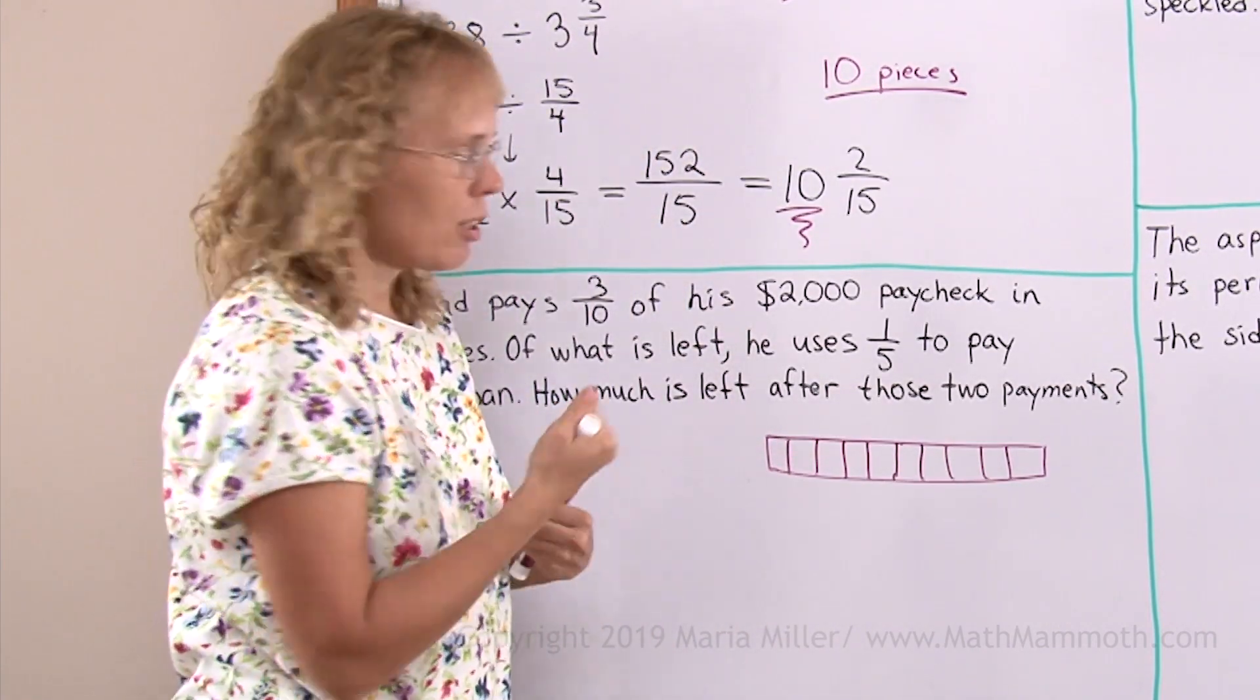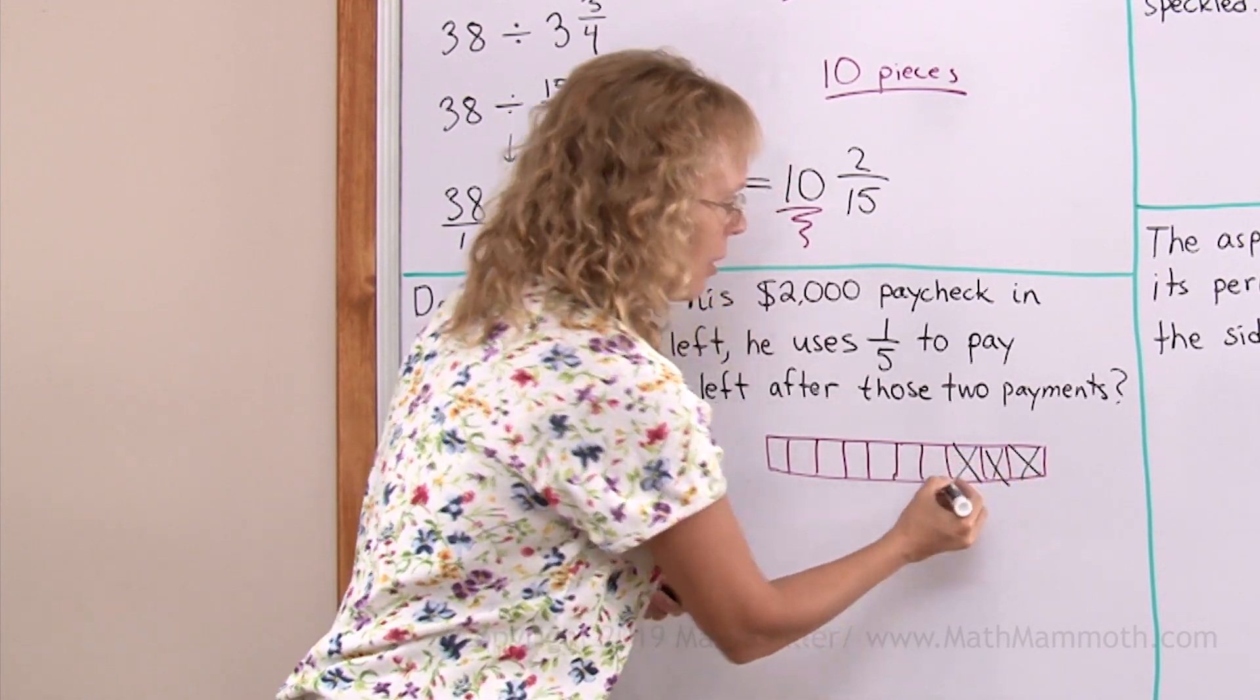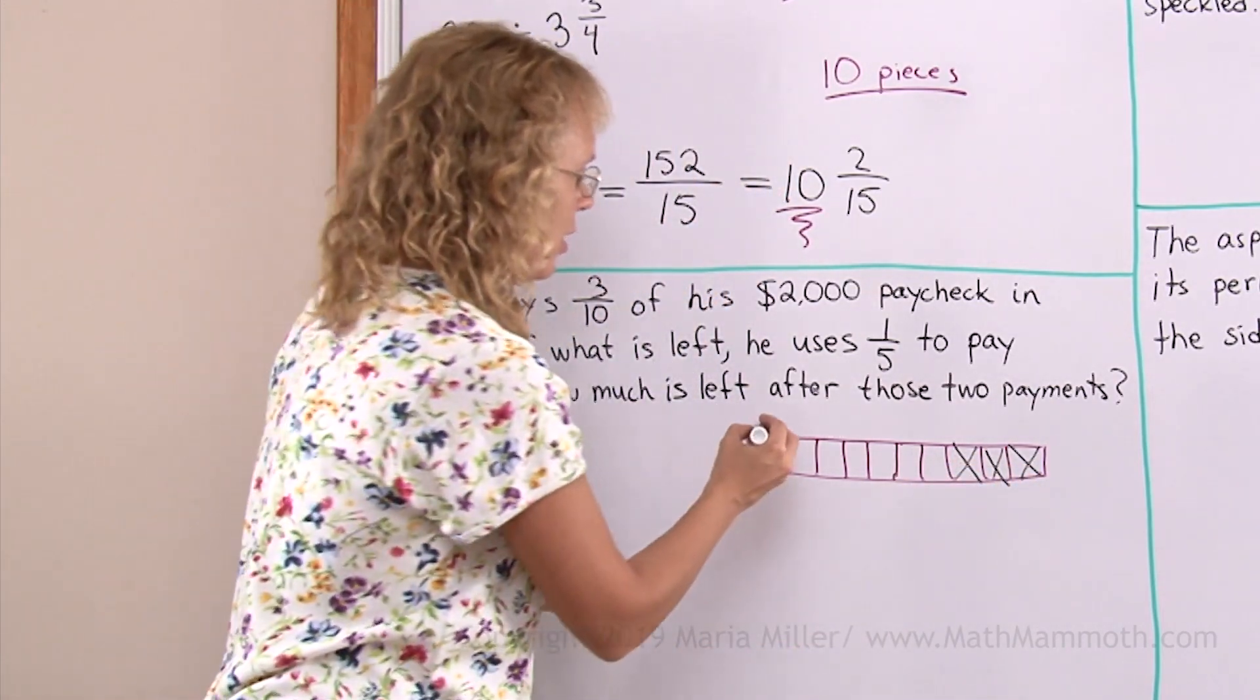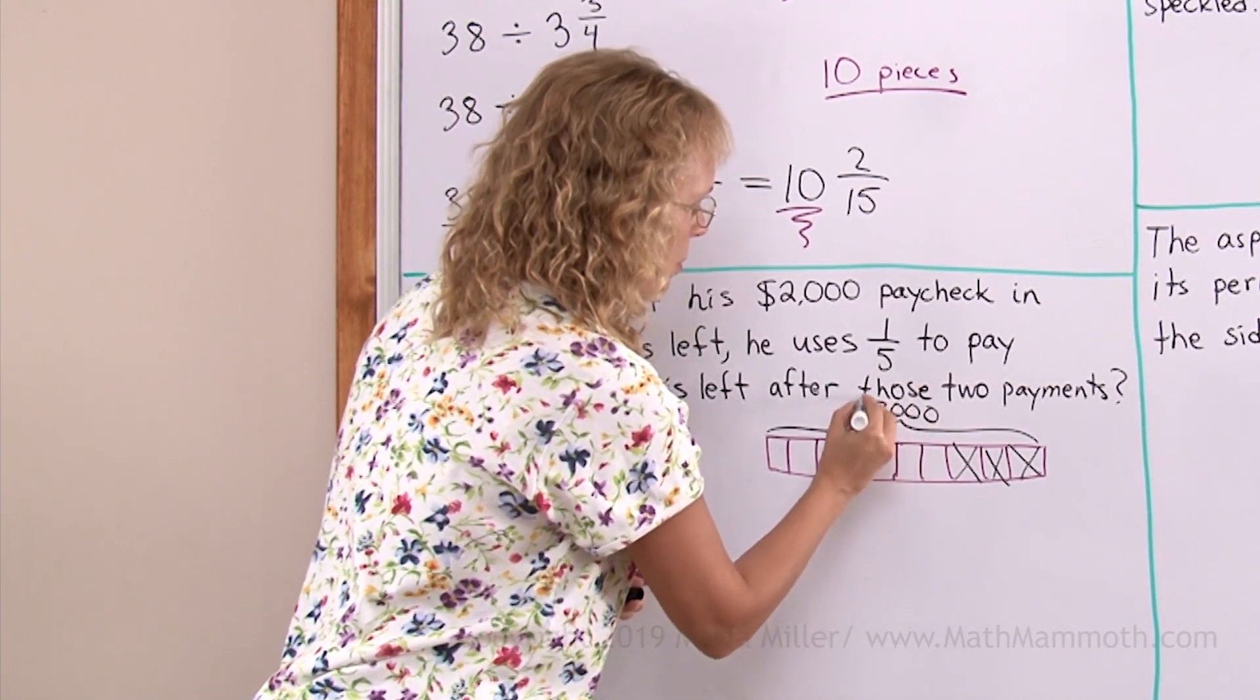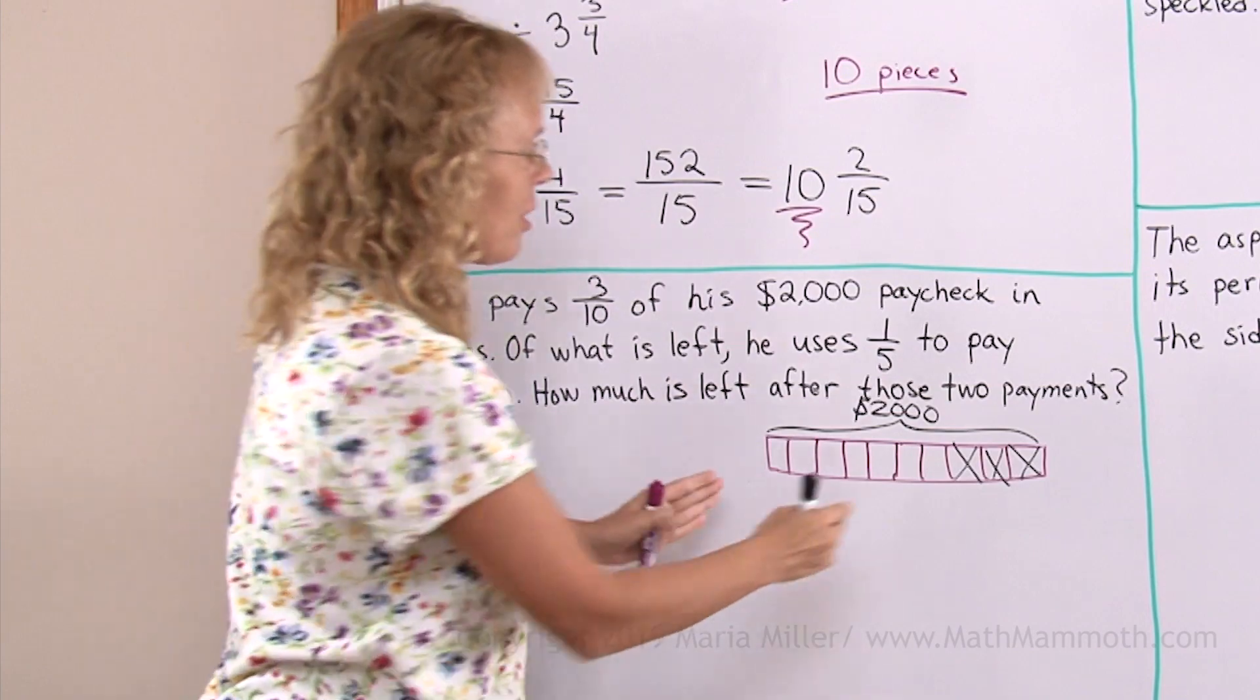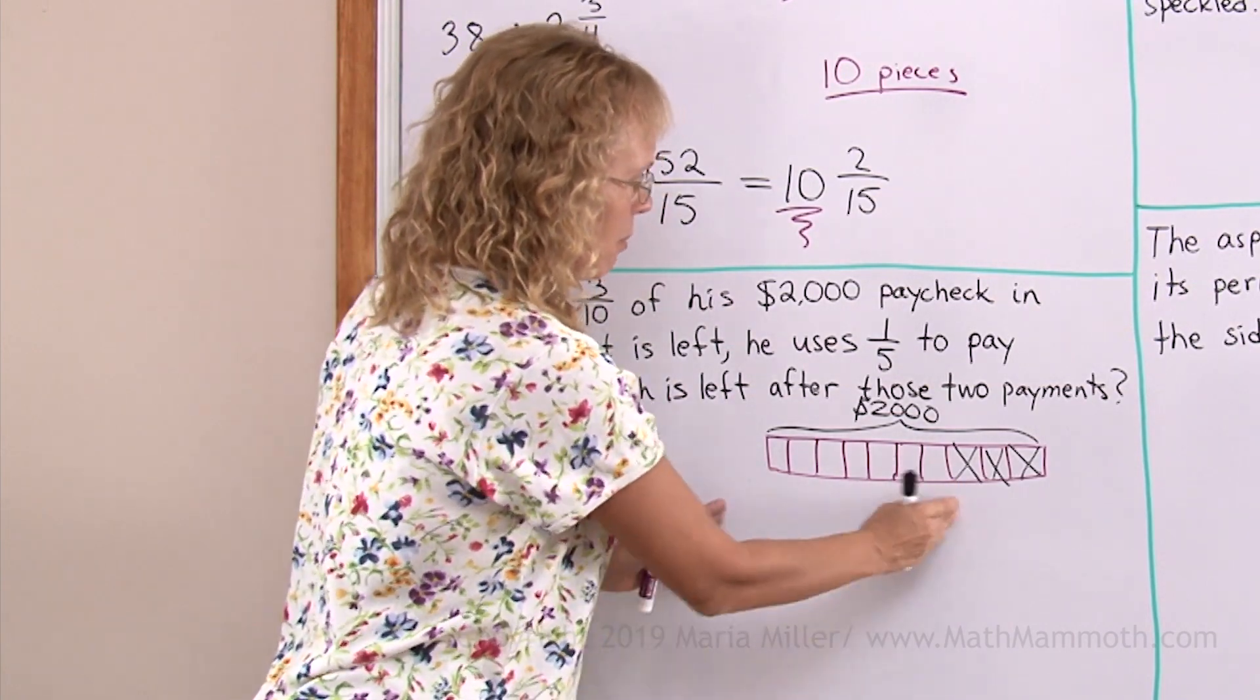There. And I'm gonna mark, he's gonna pay that much in taxes. And this whole thing is two thousand. Oops, I'm a little tight on space. Now, this is what he has left after taxes, this much.